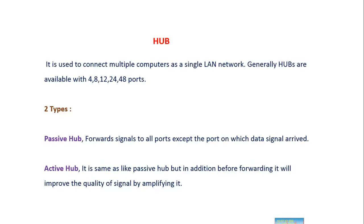An active hub works the same as a passive hub — it will broadcast the same signal to all other remaining ports except the port on which the data signal arrived. But in addition to that, it will also improve the quality of the signal by amplifying it, so it's also known as a repeater.